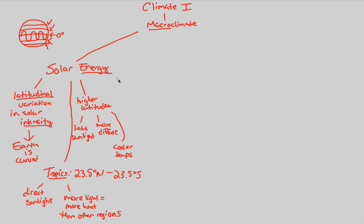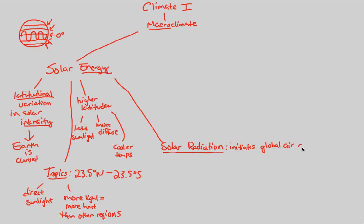We can also look at a concept like solar radiation. Solar radiation is still a part of solar energy, just a different idea. We can consider solar radiation the idea that initiates global air circulation — this is what weather is all about. Because you have air circulating, you will also have what we consider precipitation patterns. All the weather that we observe is based off of solar radiation, and thus we have precipitation and air circulation.